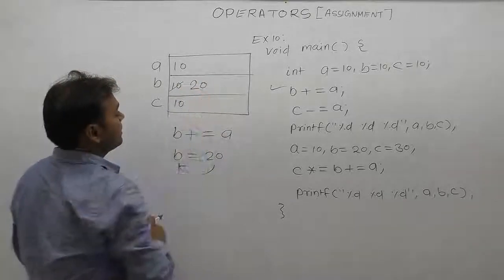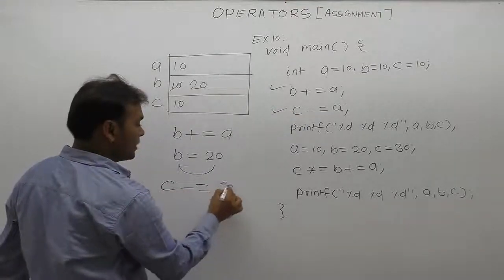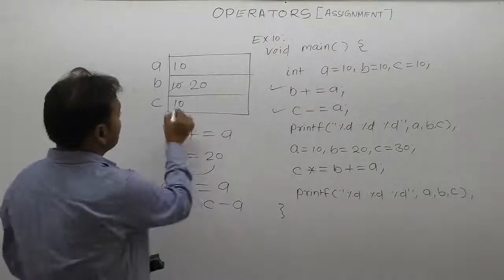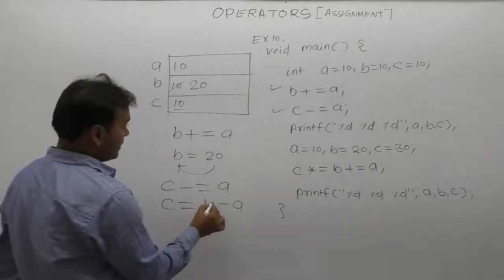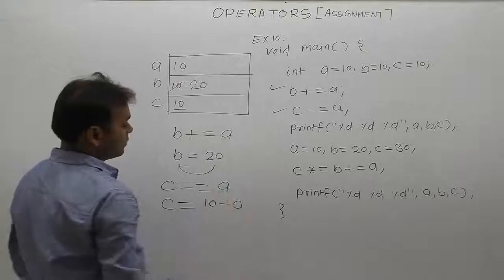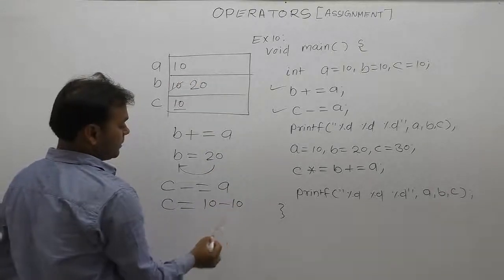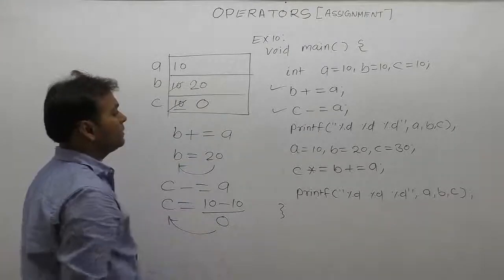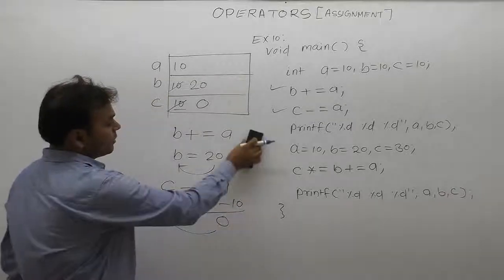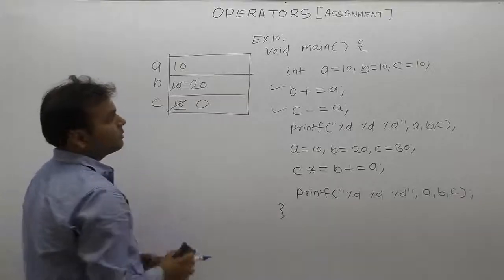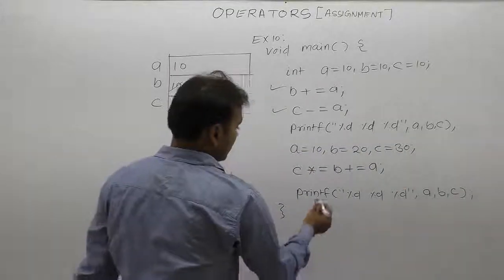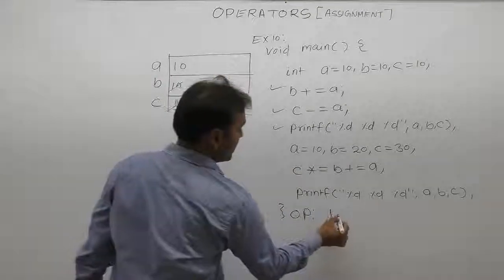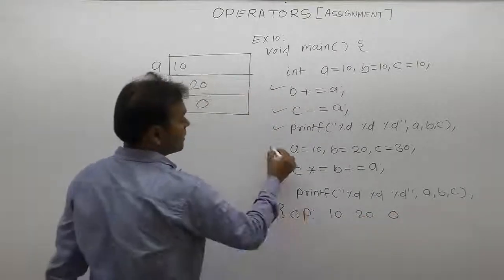Now b is initialized by 20. Next, the second expression: c minus-equals a is equivalent to c equals to c minus a. Value of c is 10, and value of a is also 10, so 10 minus 10 is 0. Zero is assigned to variable c. Now value of c becomes 0. After solving both expressions, the printed values of a, b, c are: 10, 20, and 0.